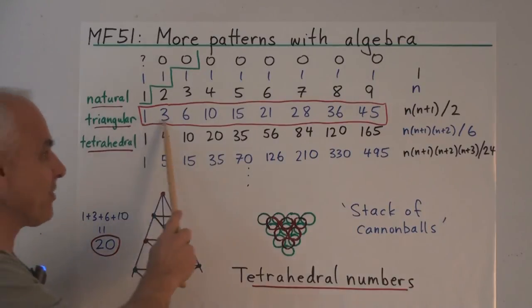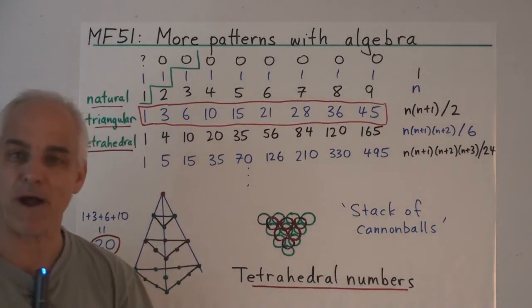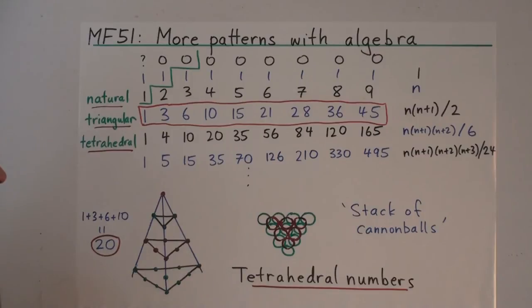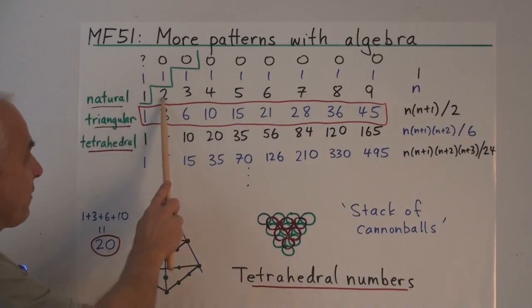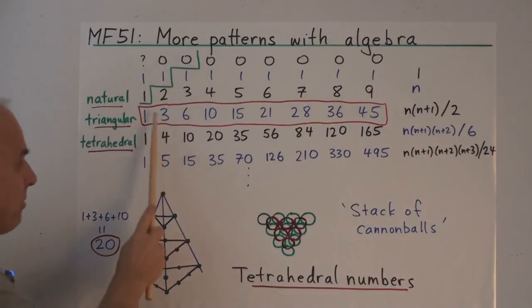Last time we talked about the table of differences formed by the triangular numbers. I'm going to adjust my notation a little bit now to make it more methodical. Instead of having the difference 2 between 1 and 3 directly above both of them, I'm going to move it over a little bit to the right, so that now 1 plus 2 equals 3.